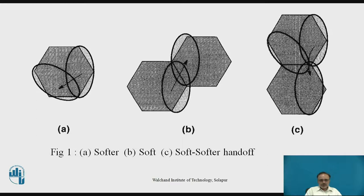In the first figure, we can see a softer handoff — there is no hard disconnect, just a smooth transition. The MS is moving from one cell to another and making the communication. In the second case, it is a soft handoff. In the third case, the softer handoff procedure is shown.